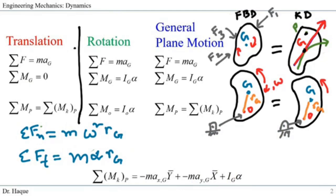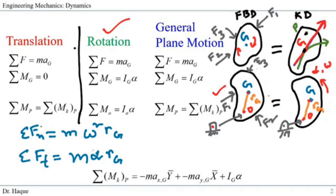Now let's talk about the rotation equations. We still have the summation of force equals M·a_G. Looking at the free body diagram and kinetic diagram: assume this body is hinged at a pin joint at point O. The kinetic diagram shows the mass center G of the body experiencing angular acceleration alpha and angular velocity omega. On the free body diagram we have forces F1, F2, and F3, and on the kinetic diagram we have the angular acceleration and velocity. Rotation has slightly fewer equations than translation, but the diagram can be more complex.